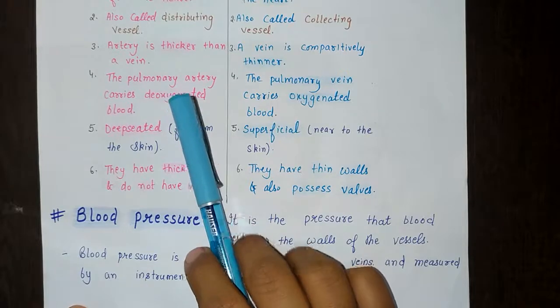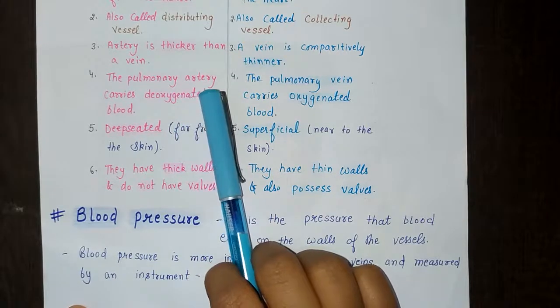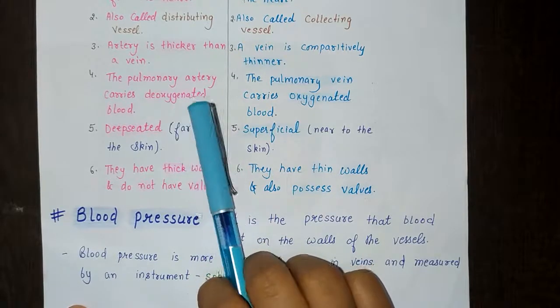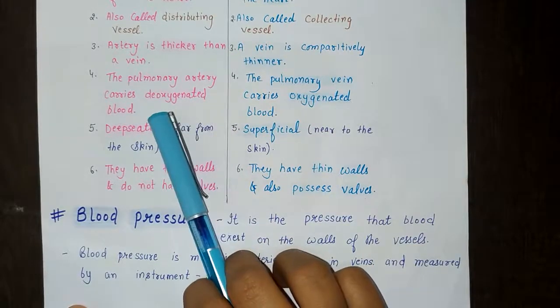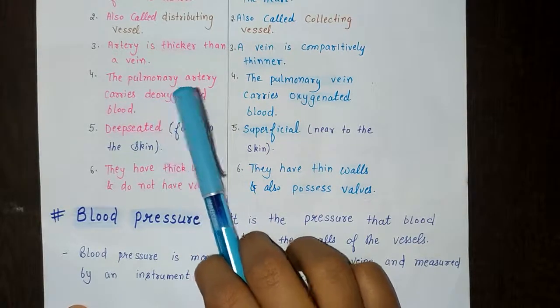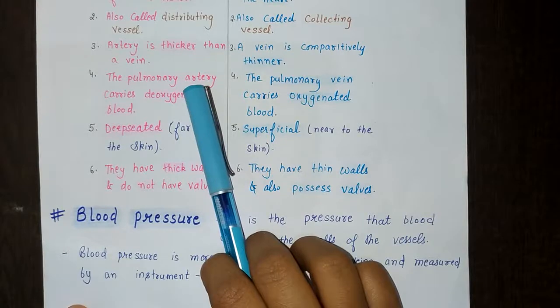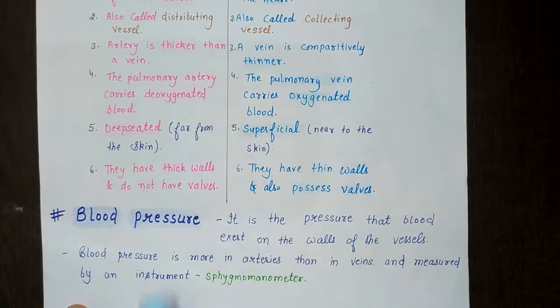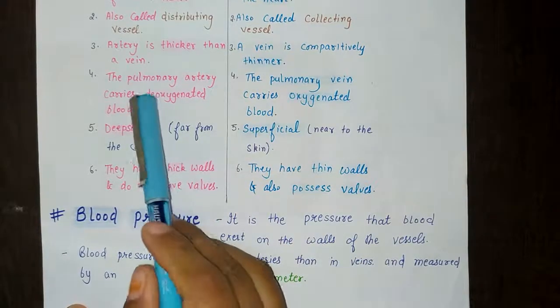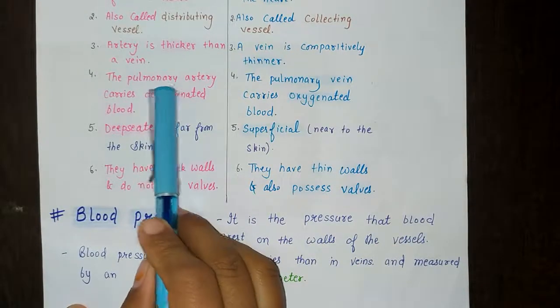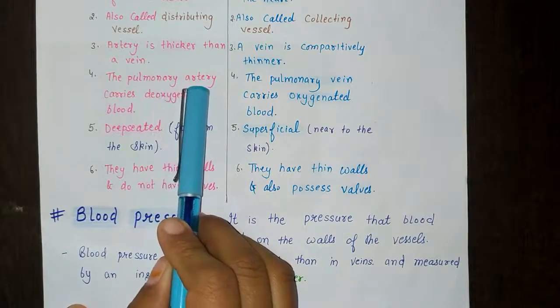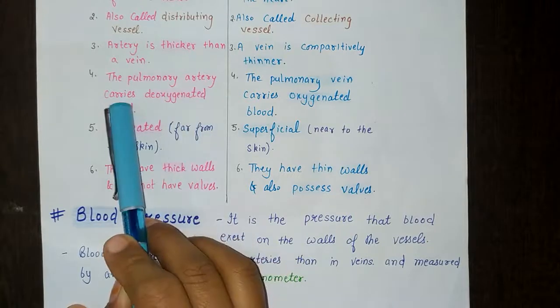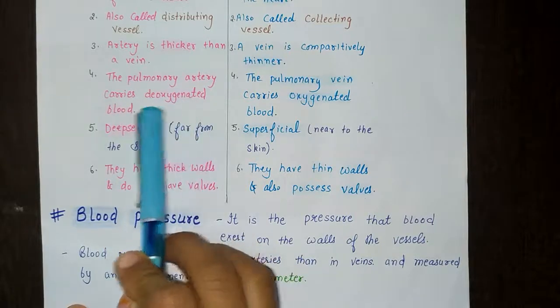The fourth point is that pulmonary arteries carry deoxygenated blood. Pulmonary refers to anything lung-related. So pulmonary arteries carry deoxygenated blood.